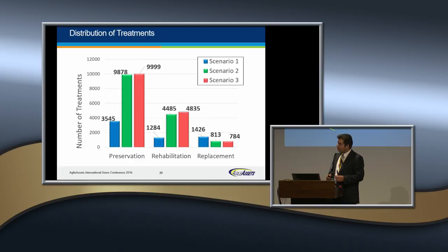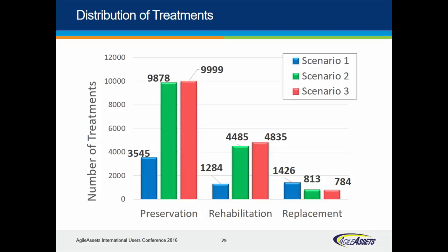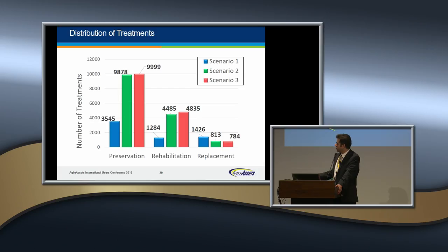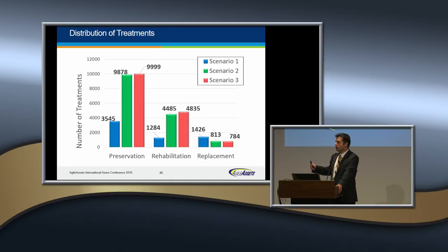Why did that happen? Looking at the distribution of treatments: Scenario 1 has the minimum preservation treatment and the maximum replacement treatment — and replacement is a very high-cost treatment. Scenario 3, on the other hand, has the highest amount of low-cost preservation treatment and the fewest replacements. By doing early-stage, low-cost treatments and focusing on good condition, we can end up with better network-level performance condition and lower cost.